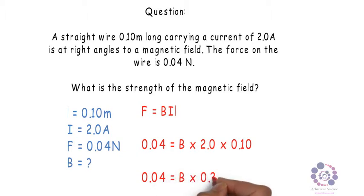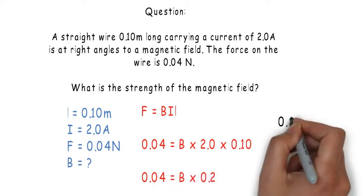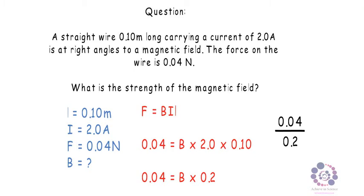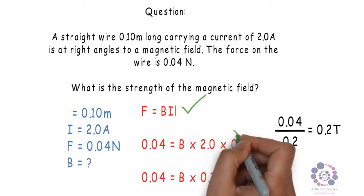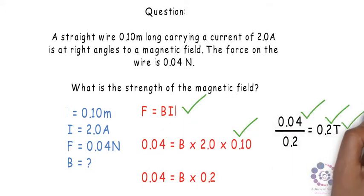And therefore you can rearrange the equation to work out that 0.04 divided by 0.2 equals 0.2 Tesla, remembering your units. Now marks are awarded for the equation, your workings, and therefore the final answer and also the units.